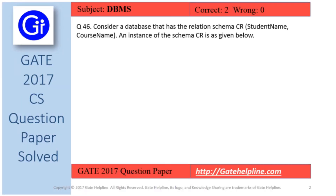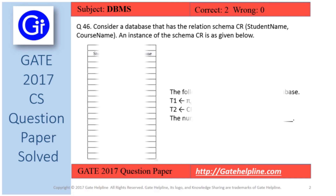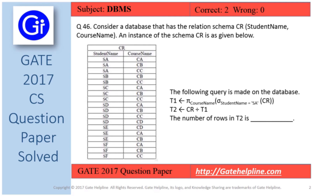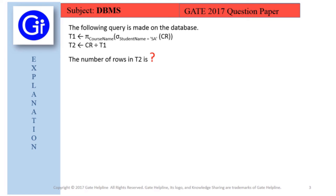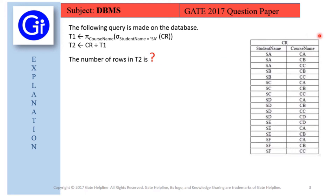Question 46: Consider a database with the relation schema CR having student_name and course_name as columns. An instance of the schema CR is given. The following query is made on the database: T1 ← Π_course_name(σ_student_name='SA'(CR)); T2 ← CR ÷ T1. The number of rows in T2 is to be determined.